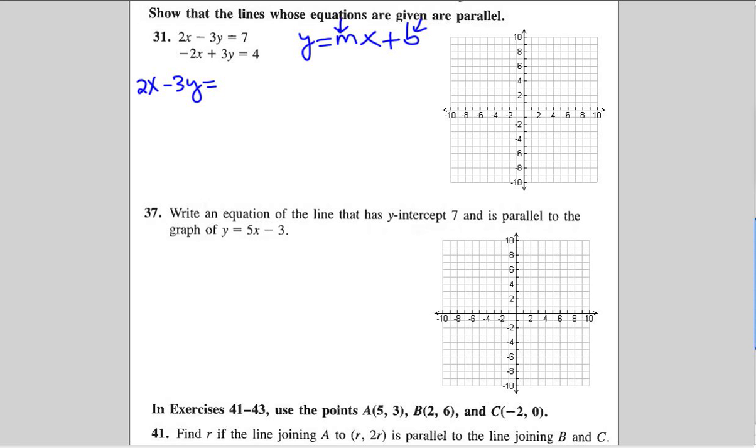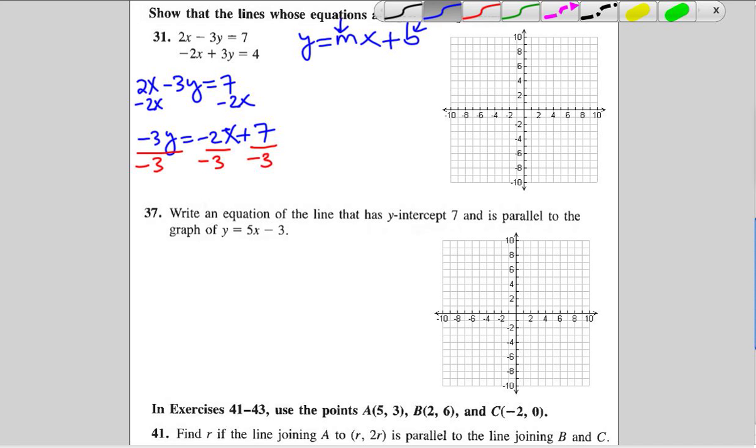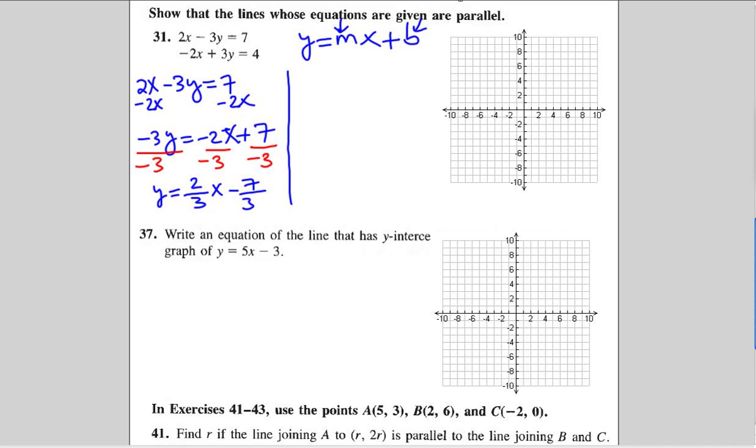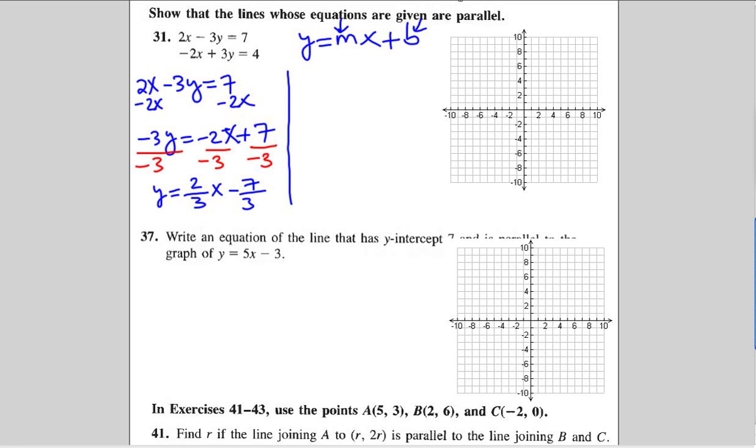In the first line we're going to subtract 2x from both sides. So we have negative 3y equals negative 2x plus 7. And we're going to divide both sides by negative 3. So now we have y by itself. Negative divided by negative is positive 2 over 3x. Positive divided by negative is negative. So in equation number one we have the slope that's 2 thirds and the y-intercept is negative 7 thirds.